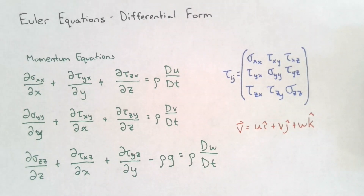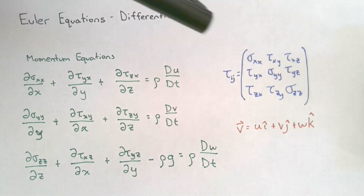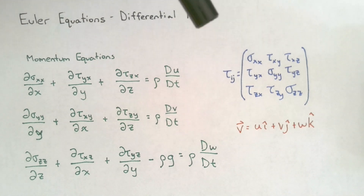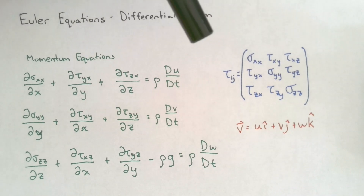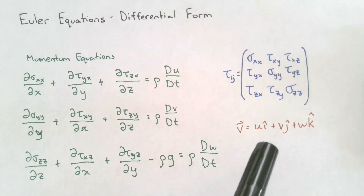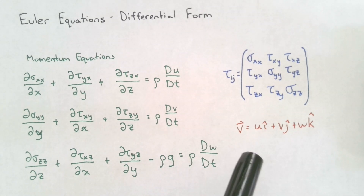Let's review what we have here. We have our three momentum equations in the x, y, and z directions. We know that the momentum equations depend on the stress tensor, and the stress tensor consists of normal and shear stresses acting on each face of your fluid element in x, y, z space. We also know that the velocity of a fluid element is a vector consisting of x, y, and z components named u, v, and w, respectively.